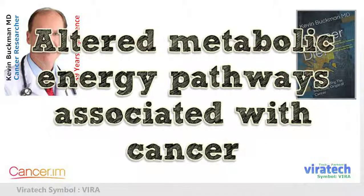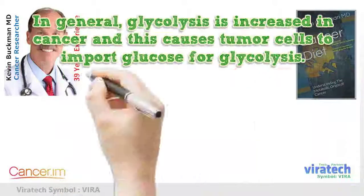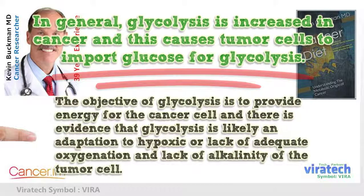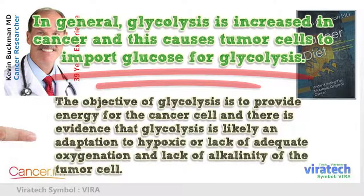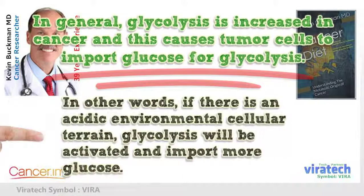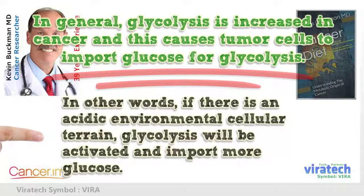Altered Metabolic Energy Pathways Associated With Cancer. In general, glycolysis is increased in cancer and this causes tumor cells to import glucose for glycolysis. The objective of glycolysis is to provide energy for the cancer cell, and there is evidence that glycolysis is likely an adaptation to hypoxic conditions, or lack of adequate oxygenation and lack of alkalinity of the tumor cell. In other words, if there is an acidic environmental cellular terrain, glycolysis will be activated and import more glucose.